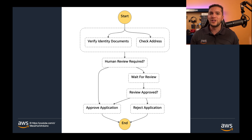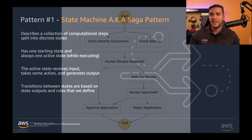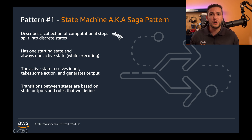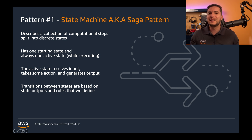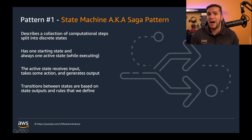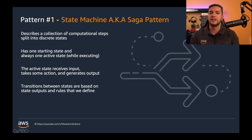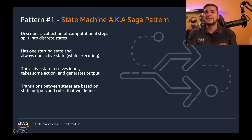What you're looking at is exactly what we call a state machine. A state machine describes a collection of computational steps split into discrete states — there's always one starting state and one state active at a time. Think of it like a workflow or an executable flowchart. As each state activates, it receives input, does something useful with it, generates output, and indicates the next state to transition to. The current state's output becomes the next state's input.